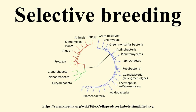The deliberate exploitation of selective breeding to produce desired results has become very common in agriculture and experimental biology. Selective breeding can be unintentional, e.g., resulting from the process of human cultivation, and it may also produce unintended, desirable or undesirable, results.